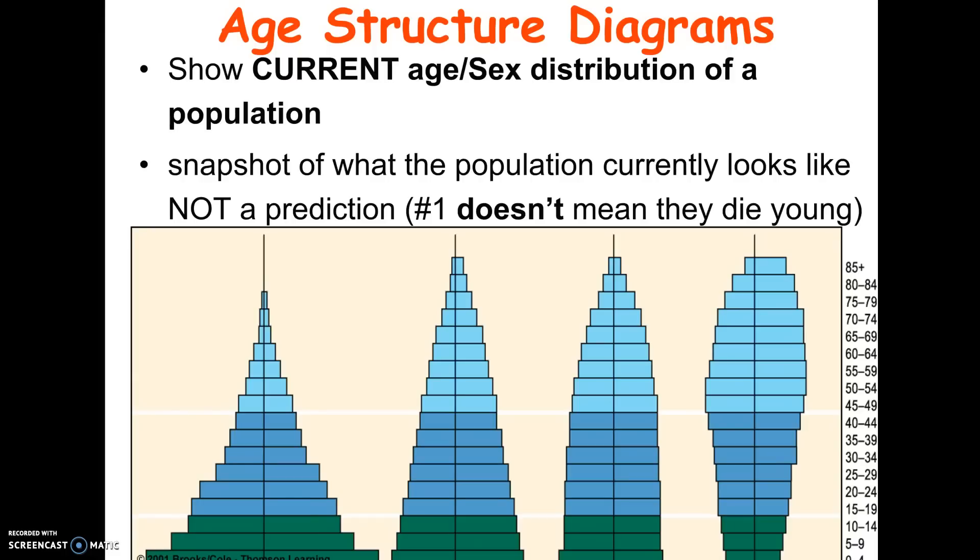It's not telling you what happens to the green section. It's just a snapshot of how many there are right now at that age.